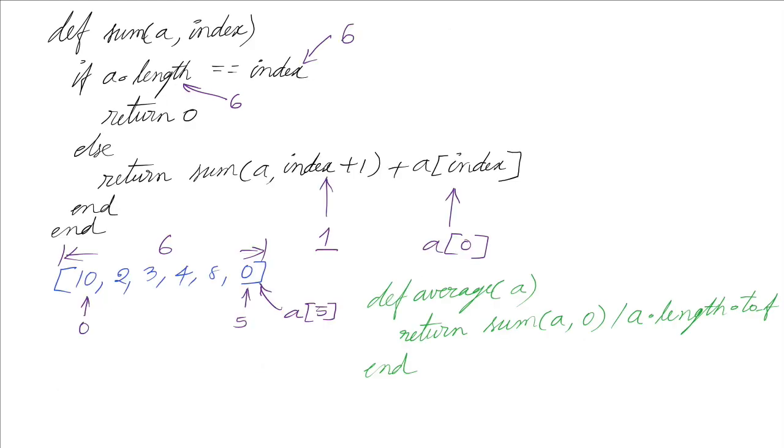By calling this recursive sum procedure with the array a, and we will start with the index zero, which is the first element. Eventually, we will divide the value by the length of the array. And we need to convert this to float to make sure we get the decimal number like this. We don't want the 0.5 to be chopped off.